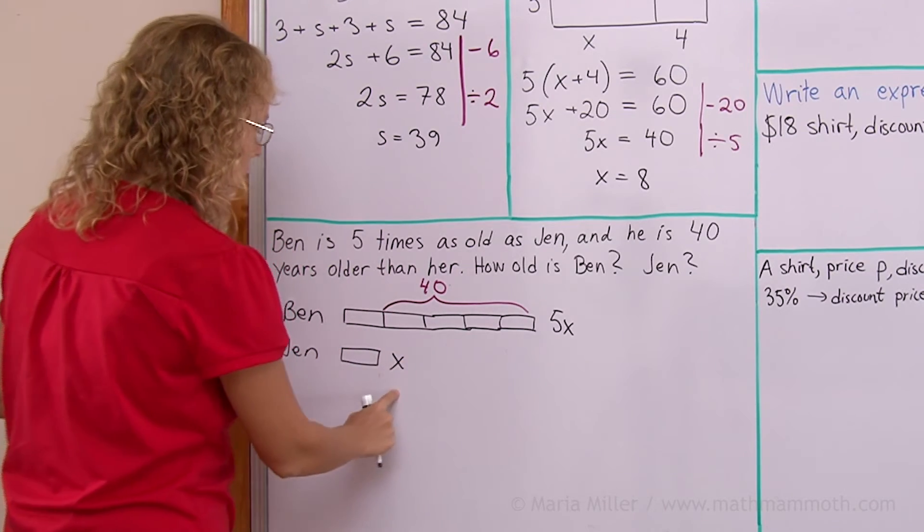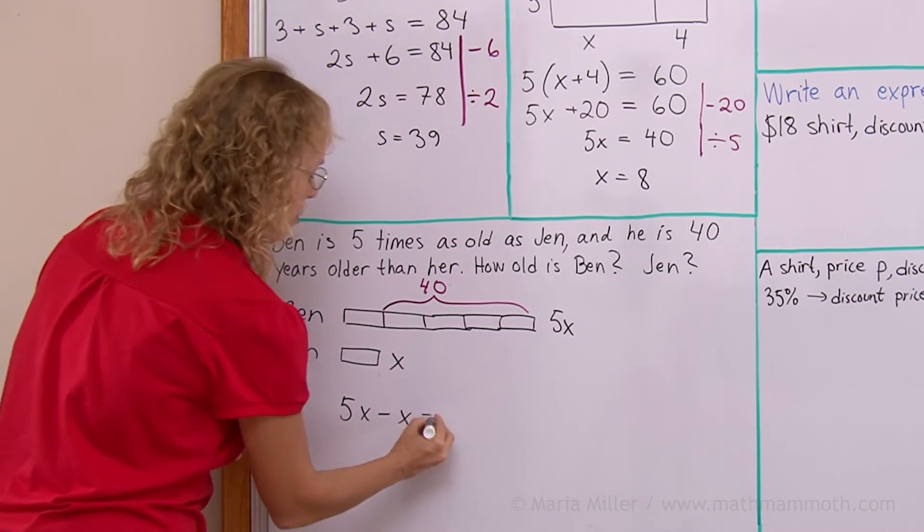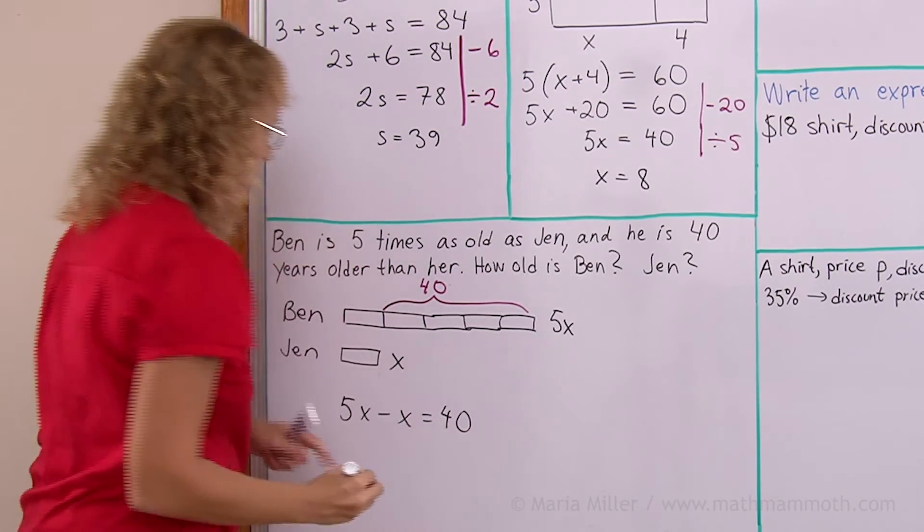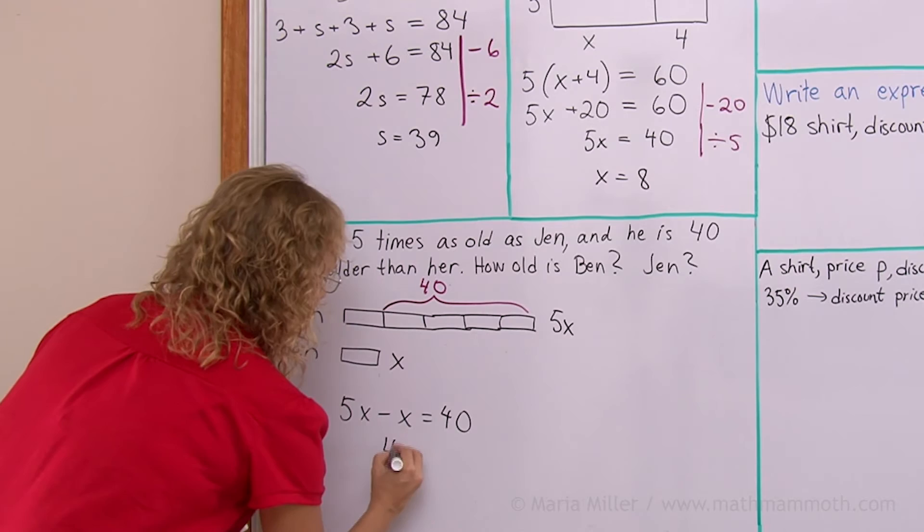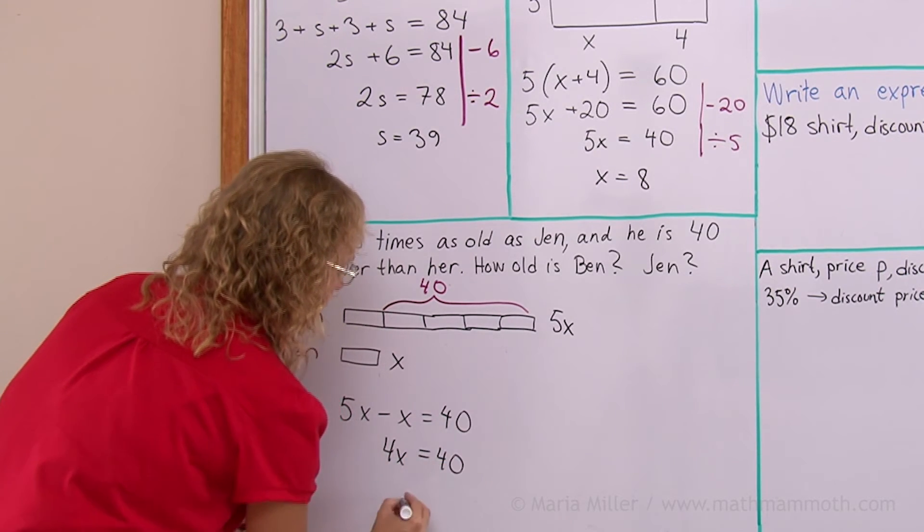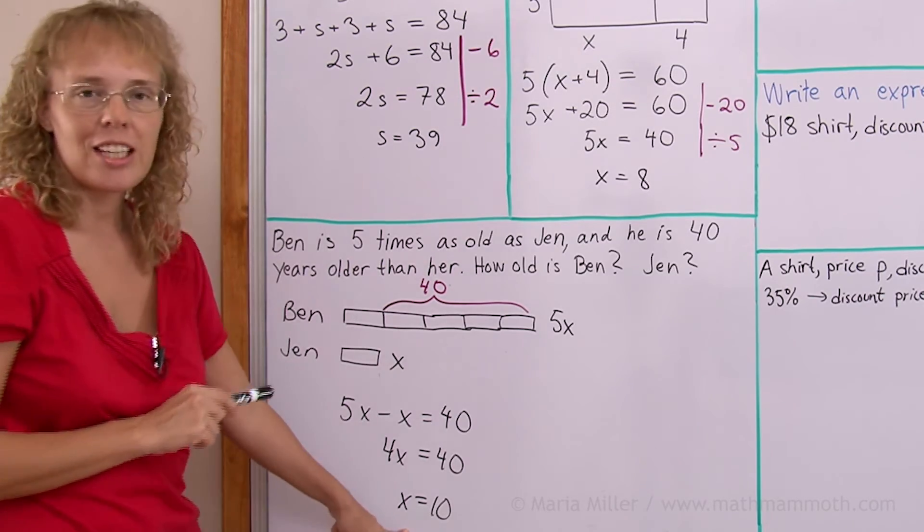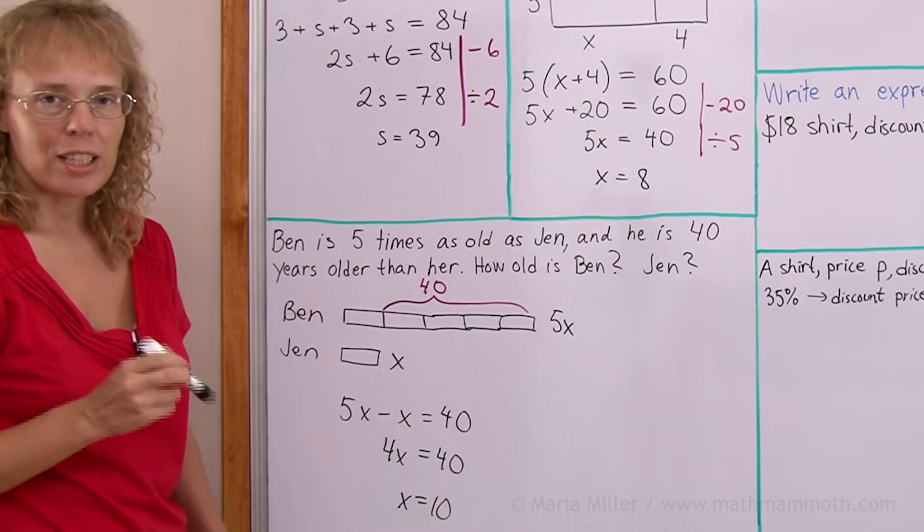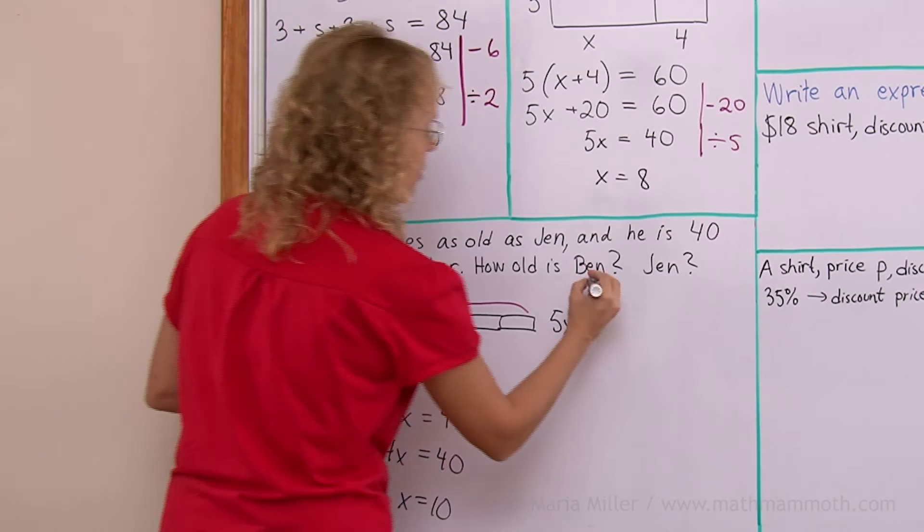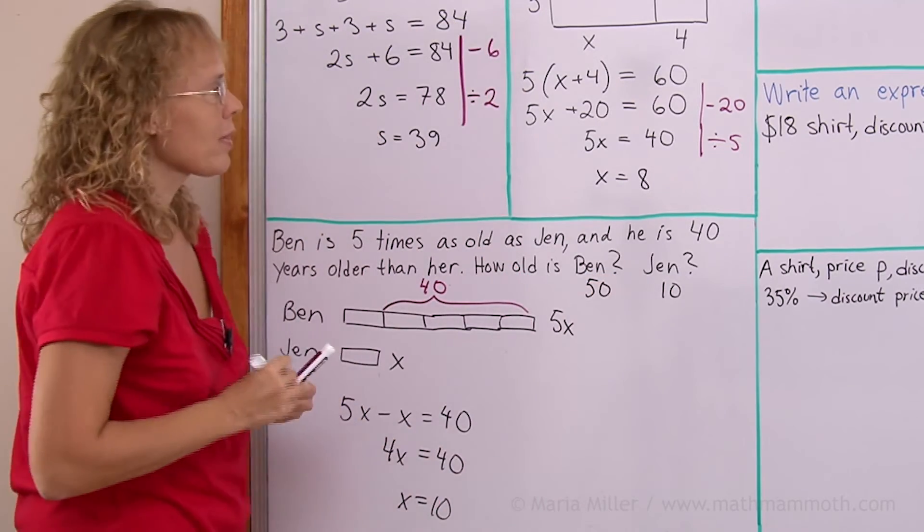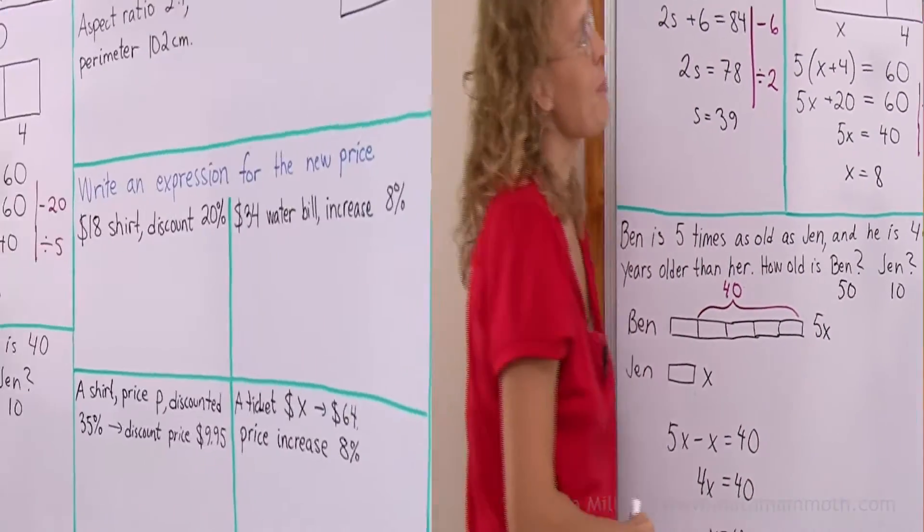And 5x minus x is, of course, 4x or 4 blocks. So we get 4x or 4 blocks equals 40 and then x equals 10. Now, this is the solution to the equation, but it's not the answer to this question here. You need to then go back to the word problem and check what was it asking. It asks, how old is Ben? Well, Ben is 50 and Jen is 10 years. The equation just helps us to find the answer to the questions.